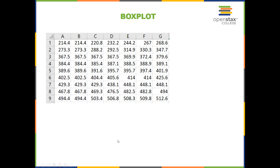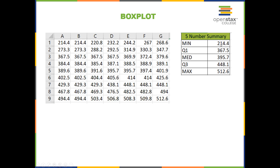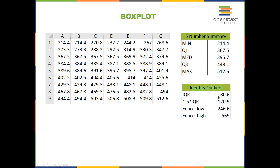Let's look at another example with a larger data set and its five-number summary. To calculate the interquartile range, subtract Q3 minus Q1. Multiply that difference by 1.5 to get 120.9. Now subtract that number from the first quartile to get the low fence: 367.5 minus 120.9 equals 246.6.